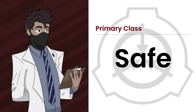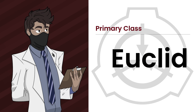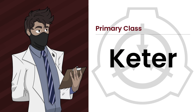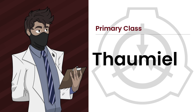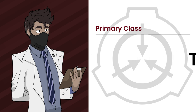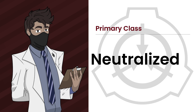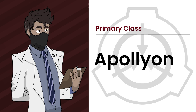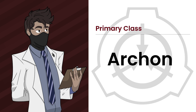Safe are for anomalies that are easily and safely contained. Euclid are for anomalies that require more resources to contain completely, or where containment isn't always reliable. Keter are anomalies that are exceedingly difficult to contain consistently or reliably, with containment procedures often being extensive and complex. Thaumiel are for anomalies that are used to contain another anomaly. Neutralized are for anomalies that are neutralized. Apollyon are for anomalies that cannot be contained or are expected to breach containment imminently. Archon are for anomalies that could be theoretically contained but are best left uncontained for some reason.